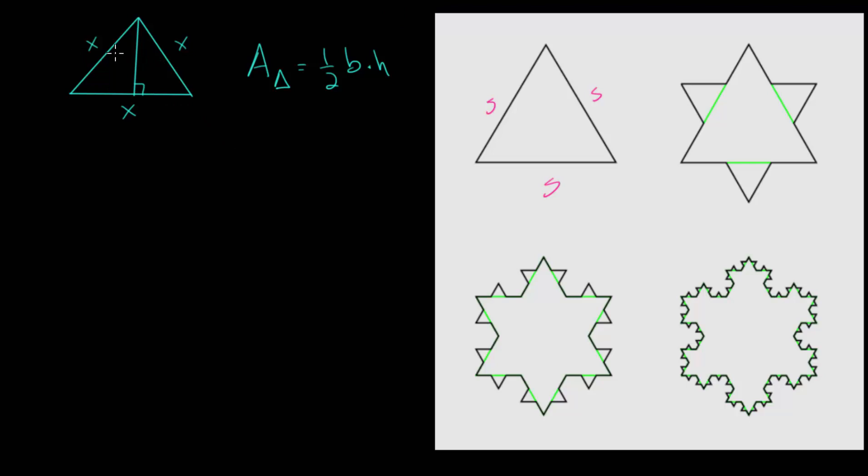This height here can be found by recognizing that each of these two triangles is a 30-60-90 triangle where this is the 30 degree angle, this is the 60, and we have a right angle.